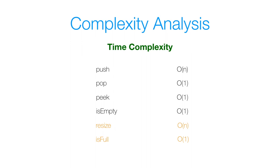Now let's move on to the complexity analysis. For time complexity, our push operation is O(n) in the worst case because our push method contains a resize method, and resize copies all elements from our old stack onto our new stack. On the average case, if we have enough space, we just increment our index and add data — that's O(1). Our pop method is a constant time O(1) operation. If you made pop shrink the stack dynamically, it would require copying all elements to a smaller array and be O(n), but our current pop just removes the top element. Peek is O(1) since we just return the top element. isEmpty is O(1) since we just check whether top is less than zero. The resize method itself is O(n) since we copy all elements. isFull is O(1) since we just check if the element count equals the array length.